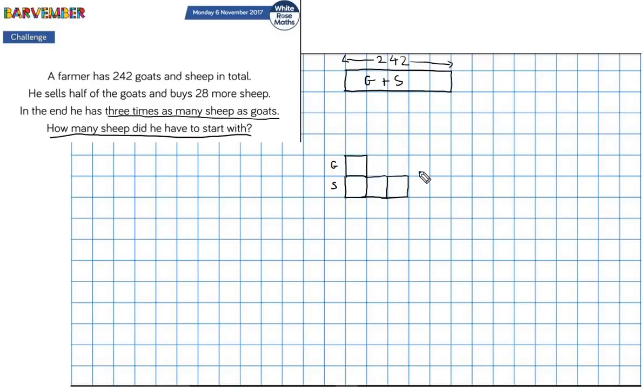Okay, he sold half of the goats. Well, this is the number of goats I have left. So he must have sold this many goats. Does that make sense? All right. He had this number of goats in the beginning. He sold half of them, half a left. Great.